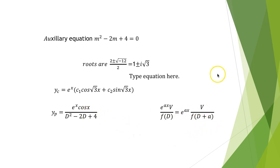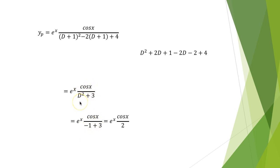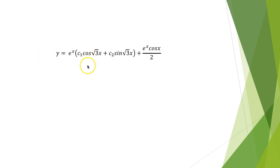Here a = 1, so this becomes e^x·cos(x) / [(D+1)² − 2(D+1) + 4], which simplifies to e^x·cos(x) / (D²+3). Now applying the trig formula, replace D² by −1²  = −1, giving e^x·cos(x) / (−1+3) = e^x·cos(x)/2. The final answer is the complementary function plus e^x·cos(x)/2.